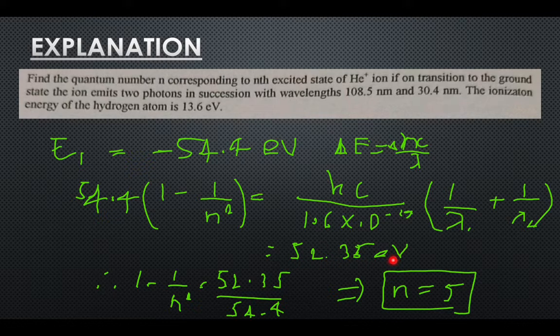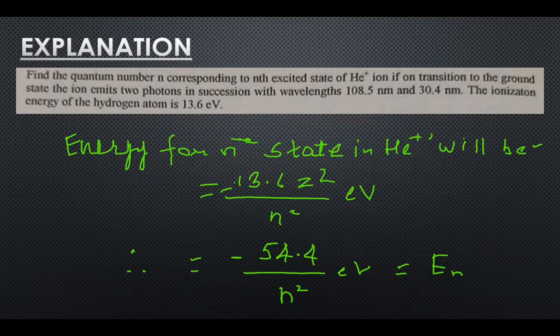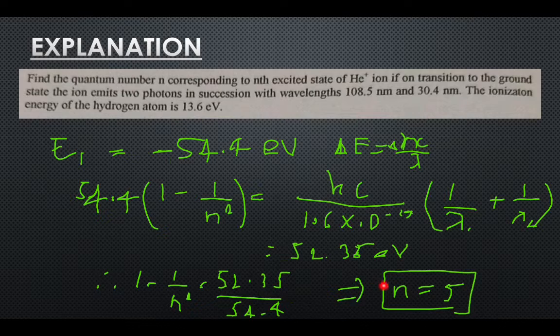Now considering LHS and RHS, we get 1 minus 1 by n squared equals to 52.35 upon 54.4, which comes out to be n. Therefore it comes out to be n equals to 5.